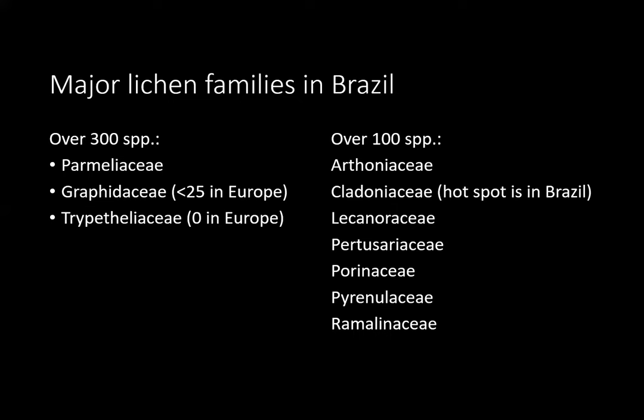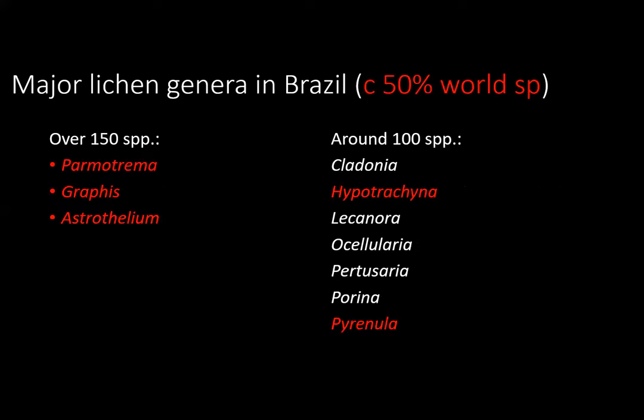The other families are more or less found everywhere in the world, but I note that the absolute hotspot of Cladonia is actually in Brazil — not in Alaska or Finland, where you might otherwise expect it. In red are the genera with roughly 50% of world species present in Brazil: Parmotrema, Graphis, Astrothelium — one from each major family — and then Cladonia with about 100 species, Hypotrachyna, and Pyrenula.